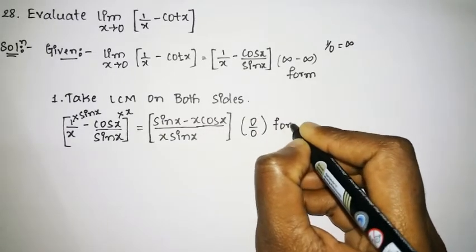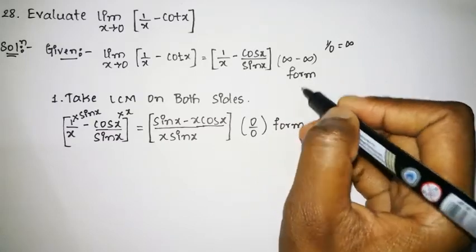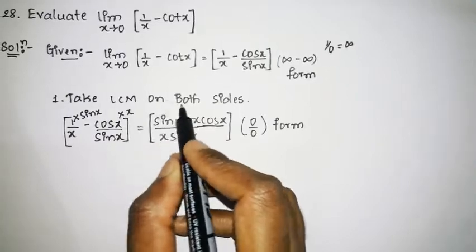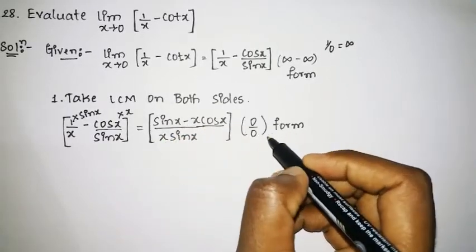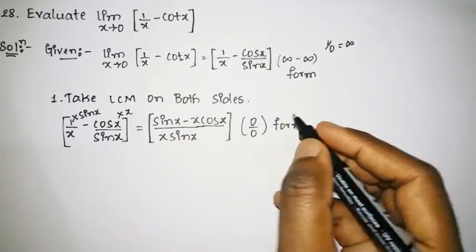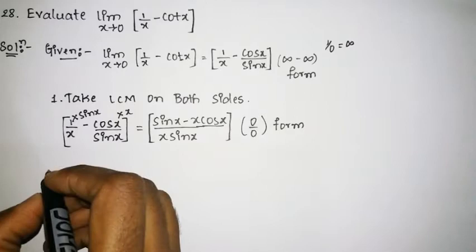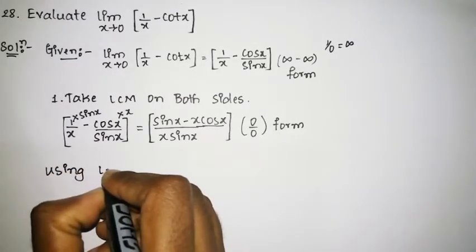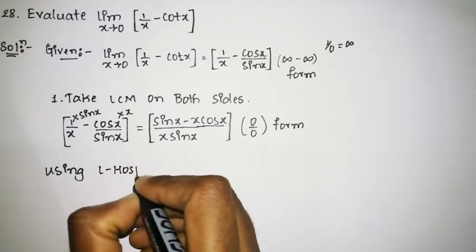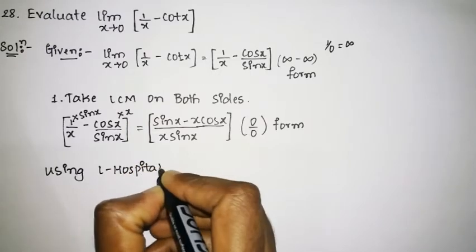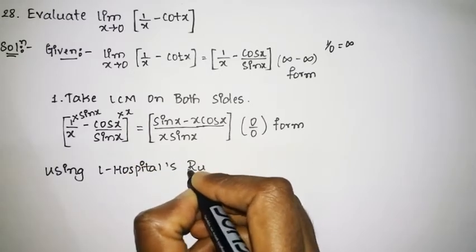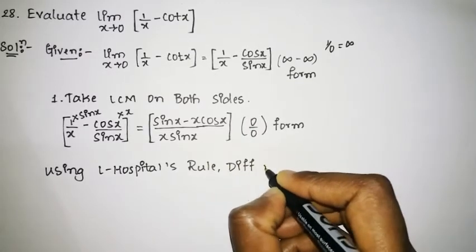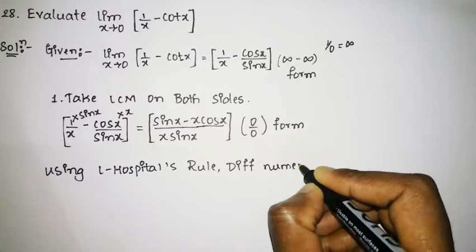We have successfully converted the infinity minus infinity form to 0 by 0 form by taking the LCM on both sides. Our next step is to apply L'Hôpital's rule, differentiating the numerator and denominator.